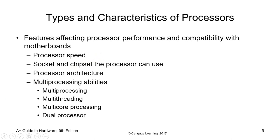What are the types and characteristics of processors? There are features affecting processor performance and compatibility with the motherboard. Starting with processor speed — we're talking about clock speed, which measures the number of cycles your CPU executes per second. These are measured in frequency, with the unit being gigahertz.